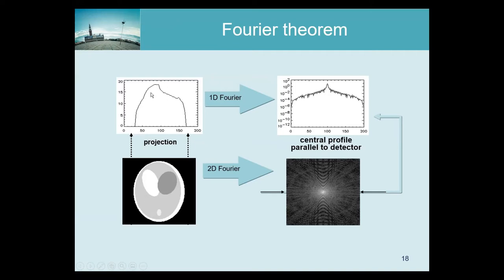We compute parallel beam projections and get this. Now we can take a one-dimensional Fourier transform, which will produce this. The Fourier slice theorem says that this is the central profile in the same direction as the projection. So the profile we obtain is along that same complete line.